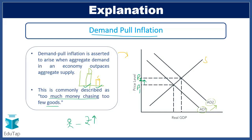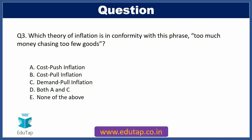Now that we understand demand pull inflation and the phrase 'too much money chasing too few goods,' we can move back to our question. This theory is in conformity with demand pull inflation, so we mark option C as our correct answer. Moving on to the next question.